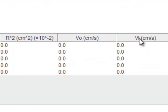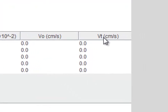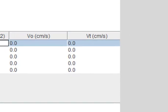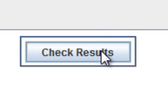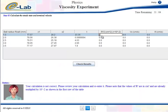For each ball, you should calculate R², steady state velocity V0, and terminal velocity Vt. Click the check results to ensure that you calculated the right values.